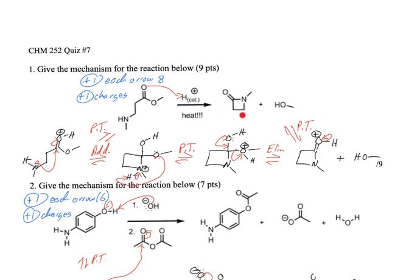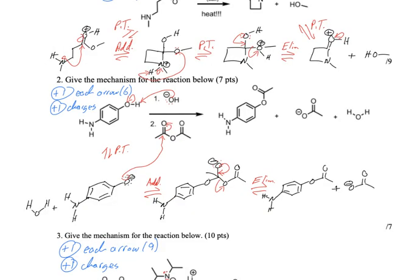That gets us to the cyclic beta-lactam. It's an active substructure in penicillin. All right, for this one, give the mechanism for the reaction below.